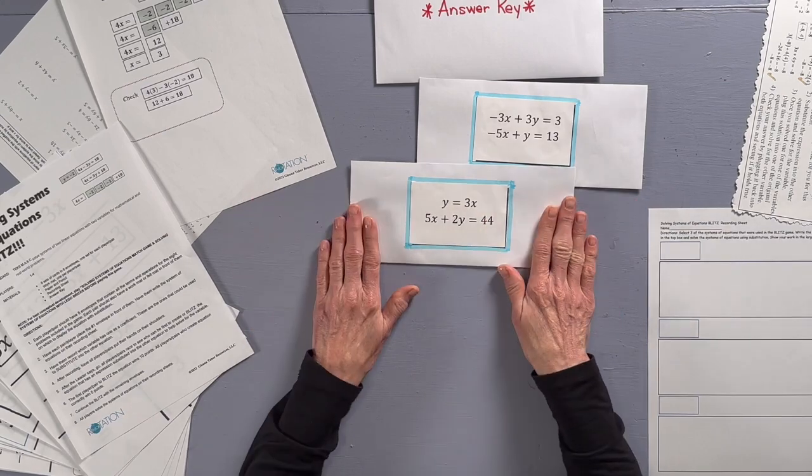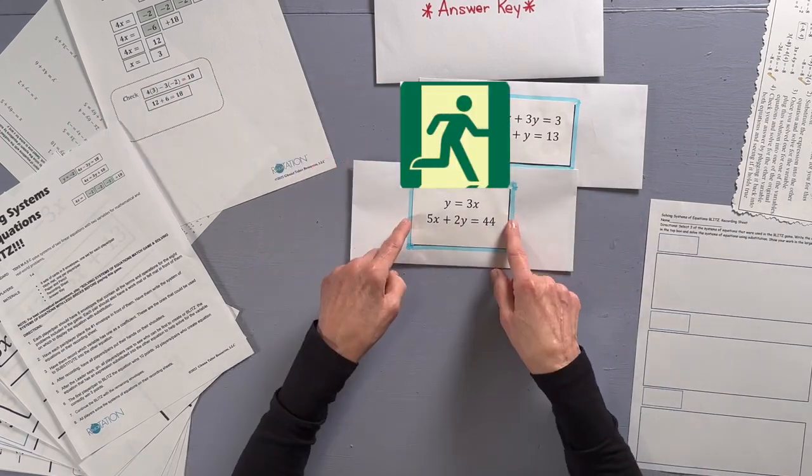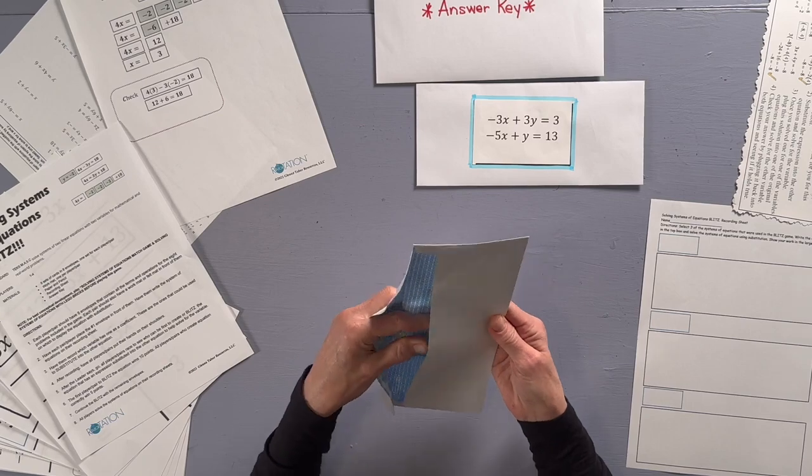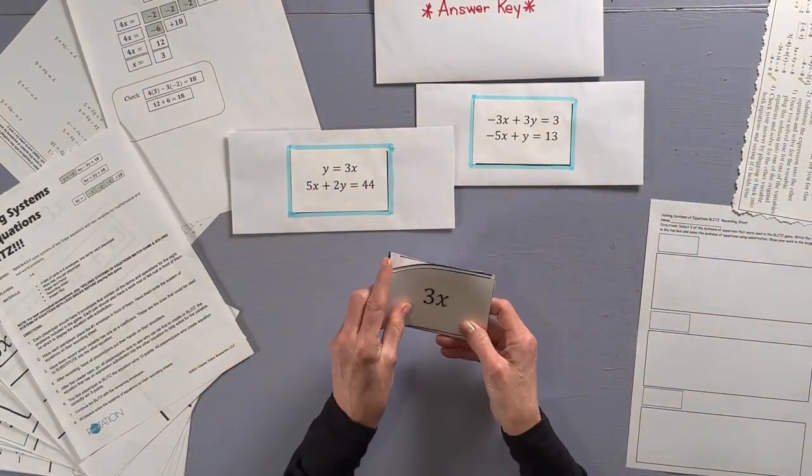All players put their hands on their shoulders. The leader says go and all players or pairs race to see who can be first to organize the cards into an equation that will find the value of one of the variables.